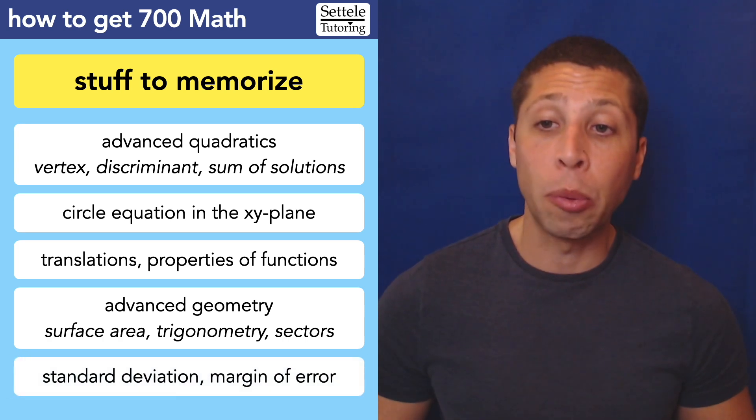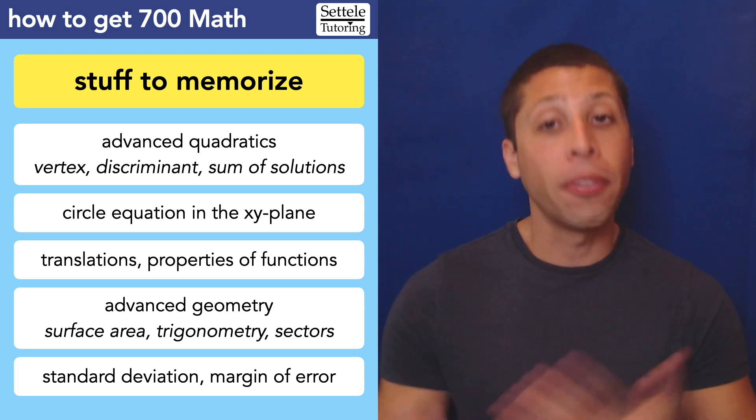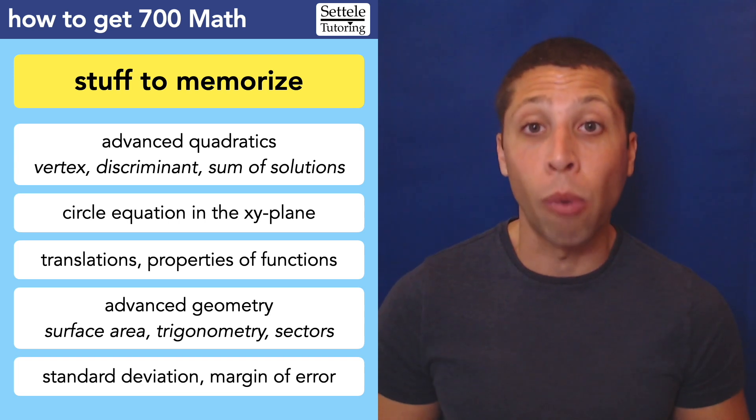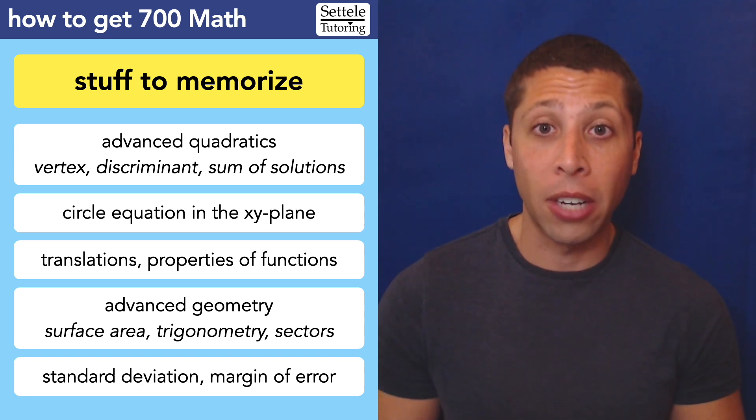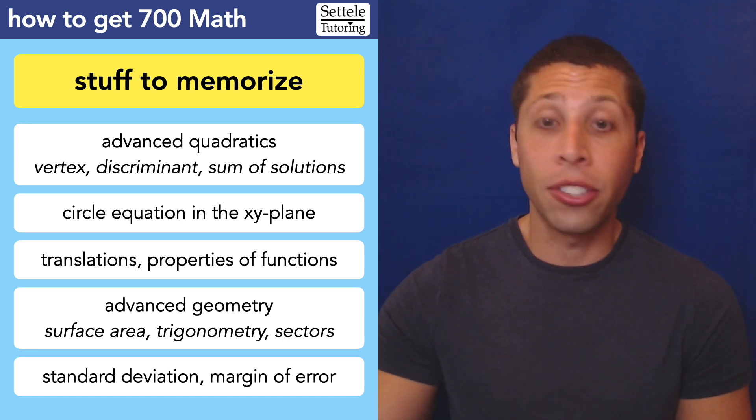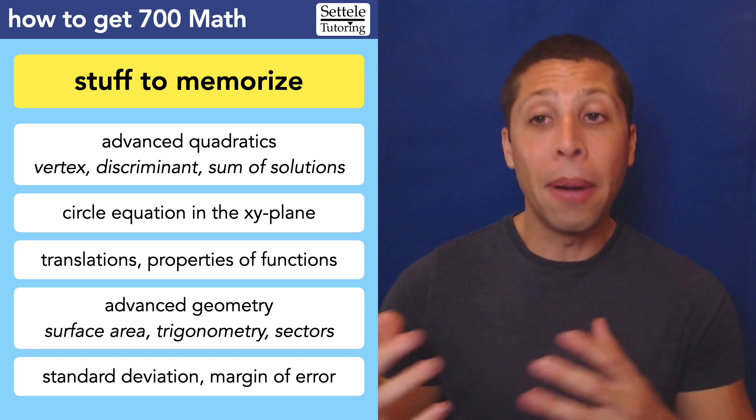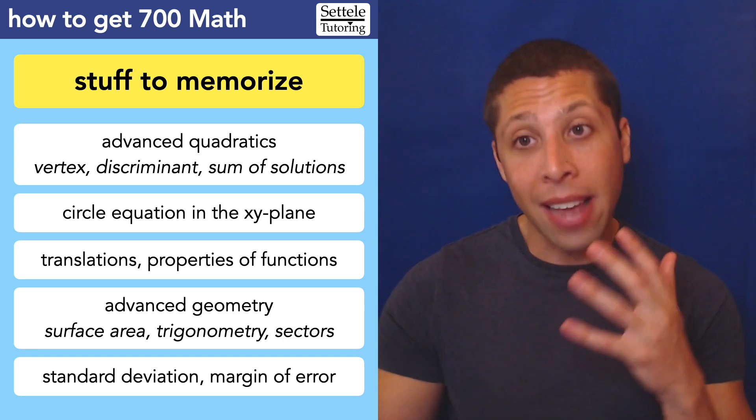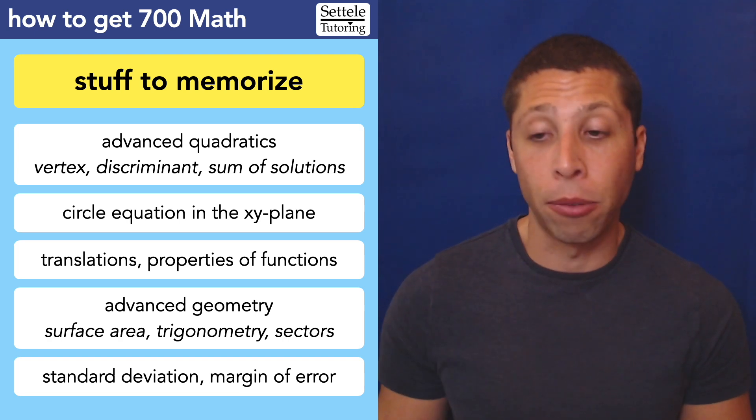Similarly, we need to be comfortable with statistics ideas like standard deviation and margin of error. They don't come up very often, but when they do, if we don't know them, we're basically guaranteeing a wrong answer. So yes, there are still things to memorize on your way to a 700. If you're not getting in the 700s yet, if you're barely getting in the 600s, then these are not high priority topics. But if you have mastered all the basics, now you need to worry about these little minor things that could make the difference for a question getting it right or wrong.